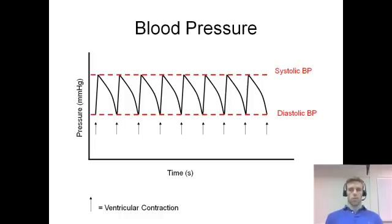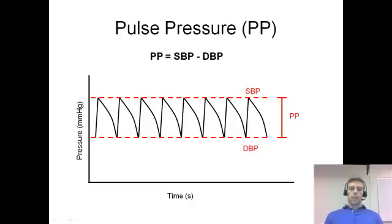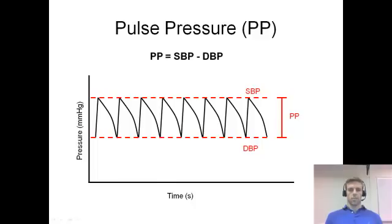Normal values for a young, healthy male are 120 for systolic blood pressure and 80 for diastolic blood pressure. The difference between those two is considered pulse pressure — it's simply your systolic blood pressure minus your diastolic blood pressure. So for our healthy young male, it's 120 minus 80, which equals a pulse pressure of 40. It's a fairly simple calculation, just some quick subtraction.